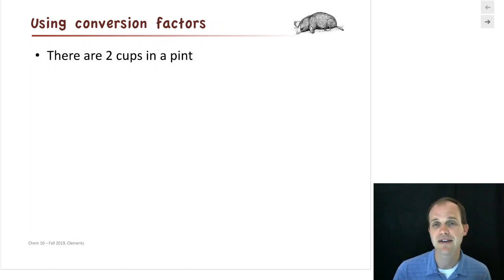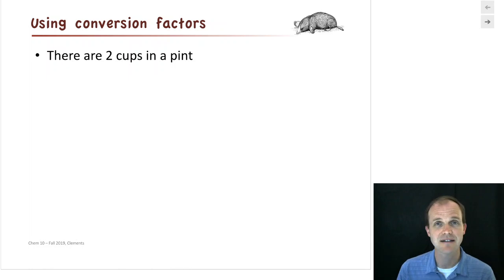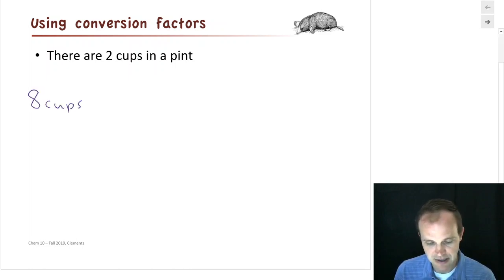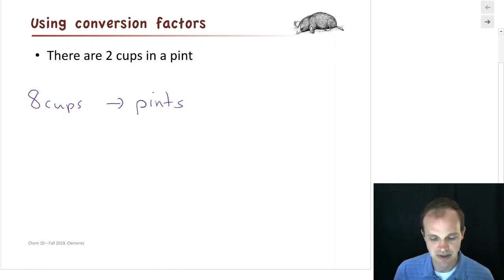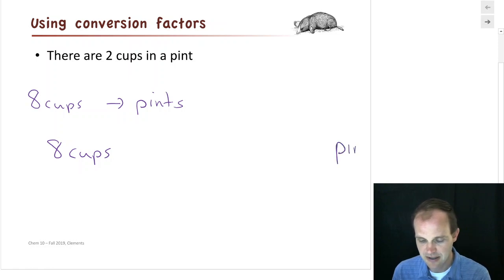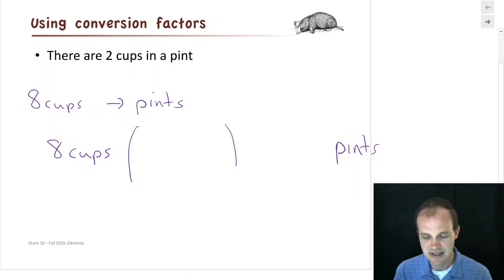How can we do that in situations where it's harder to do it off the top of your head? Like if I said I've got 14.24 cups — how many pints? That one might make you pause. But the math is exactly the same as the ones you can do in your head. So let's look at an easy example: we're going to start with eight cups and convert that into pints.